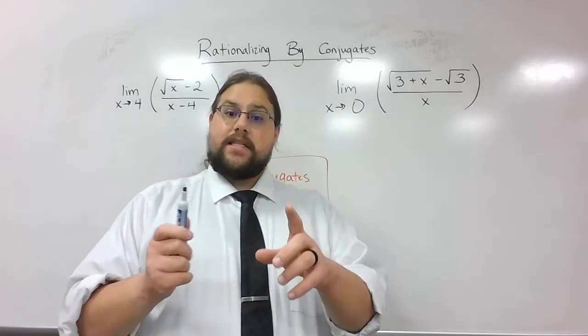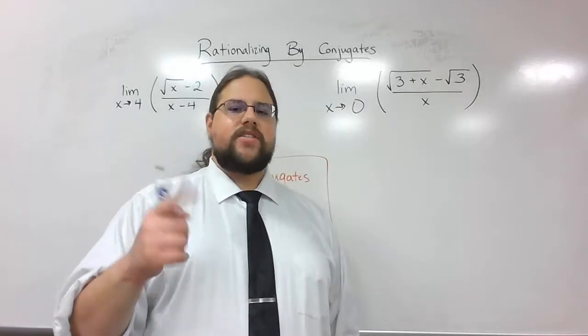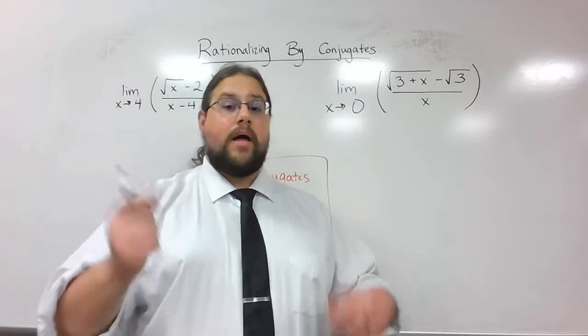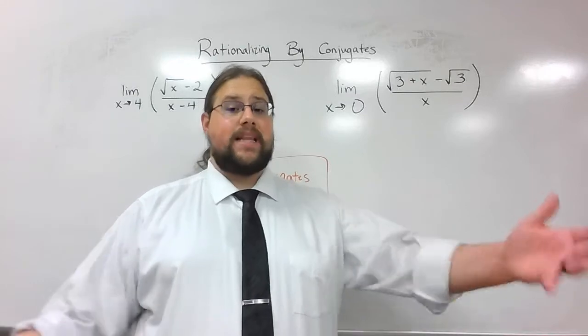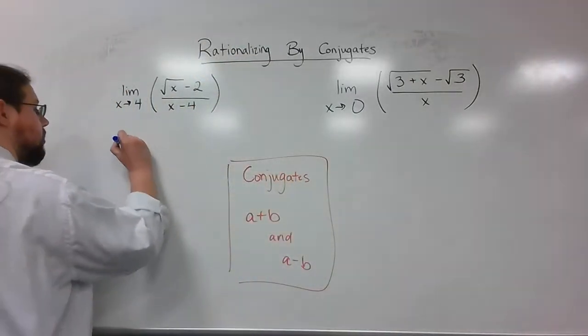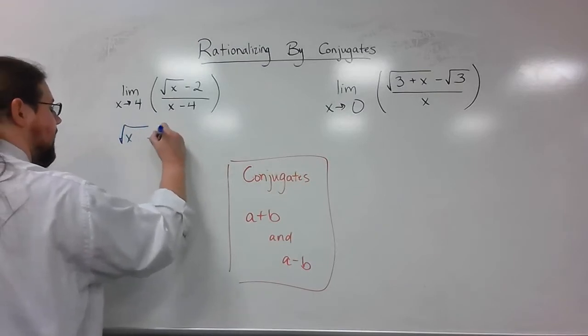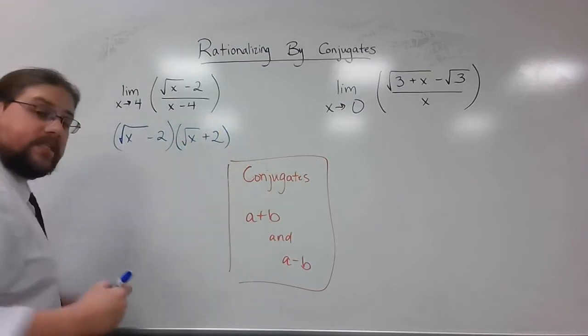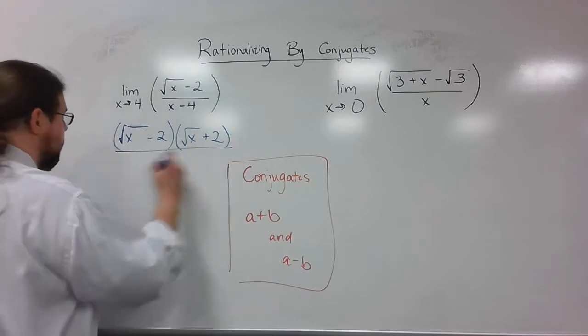So what, I might ask, is the conjugate of that numerator, the square root of x minus 2. Well, if it's minus 2, I want to make the conjugate. I'm just going to make it plus 2. So that's what I'm going to do is I'm going to multiply the square root of x minus 2 times the square root of x plus 2. And if I do it on the top, you better believe we're going to do it on the bottom.